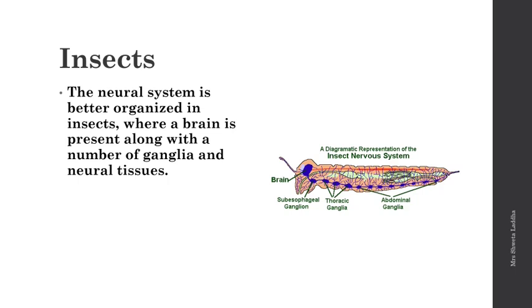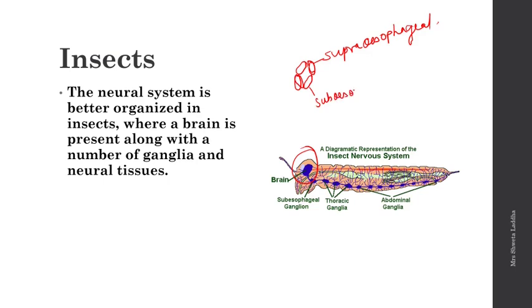In insects, the brain is formed by two ganglia called the supraoesophageal ganglia, located above the esophagus. Below them is a pair of suboesophageal ganglia. The supra- and suboesophageal ganglia are connected by a connective, forming a ring surrounding the esophagus in the anterior region — this ring is the brain, connected by the circumoesophageal connective.